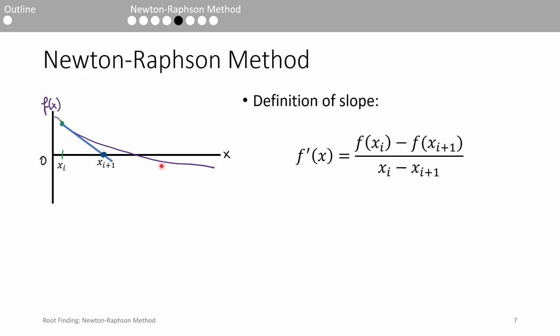We looked at Newton-Raphson visually, but now let's look at it mathematically. From the definition of a slope, we have the slope equals f, all over x. Because we follow the tangent line down to the x-axis, f equals 0. If we want to solve for x, all we have to do is rearrange this equation.